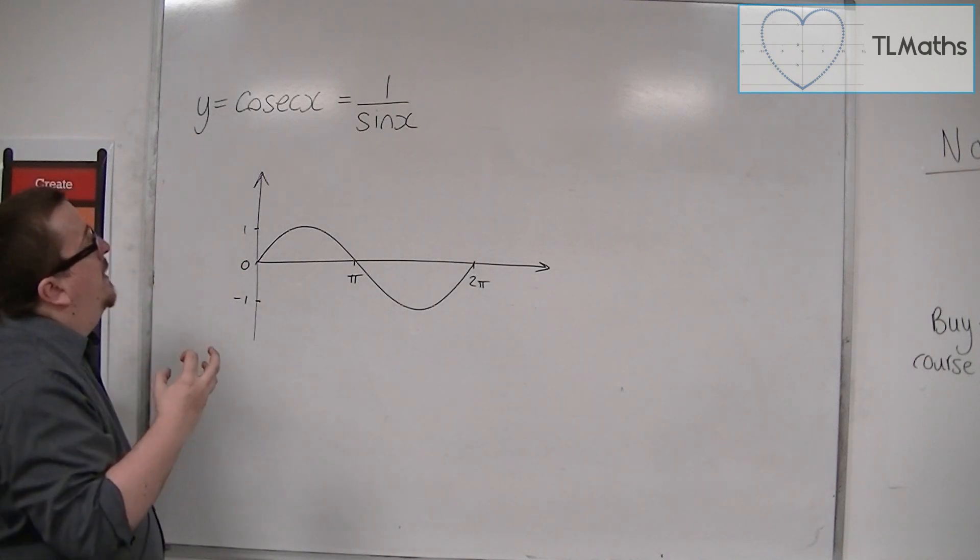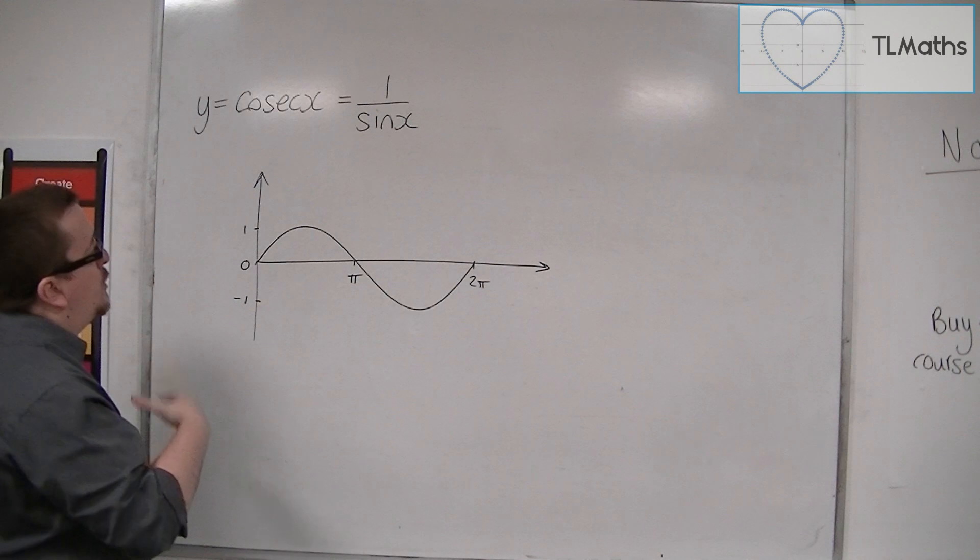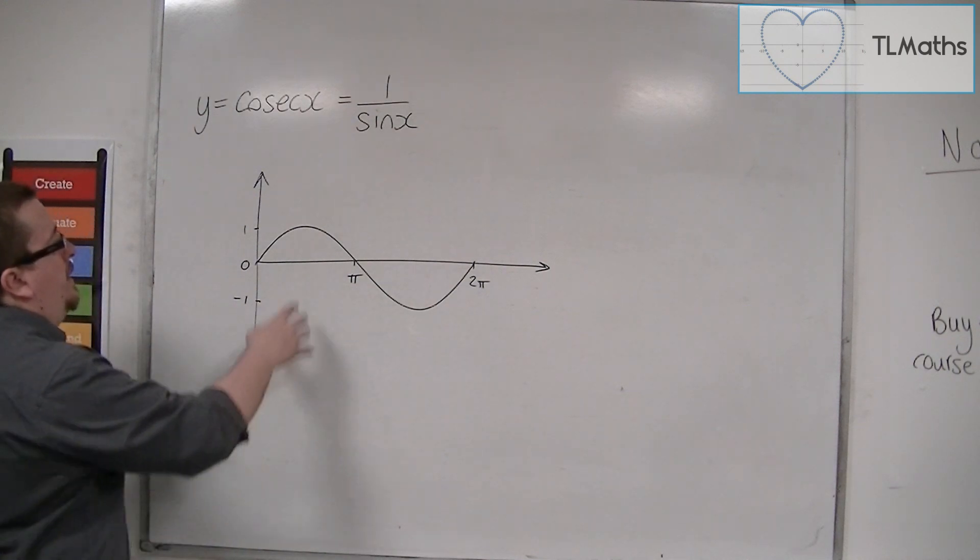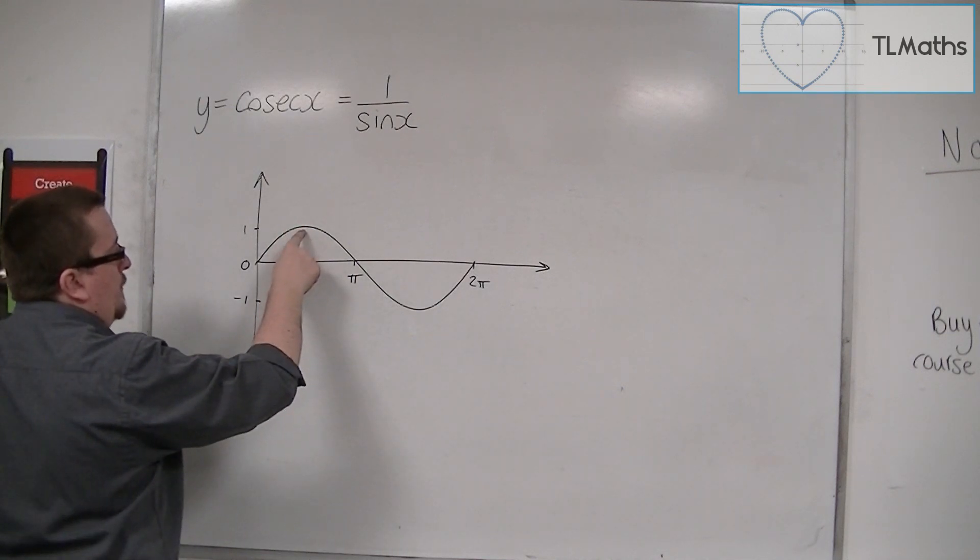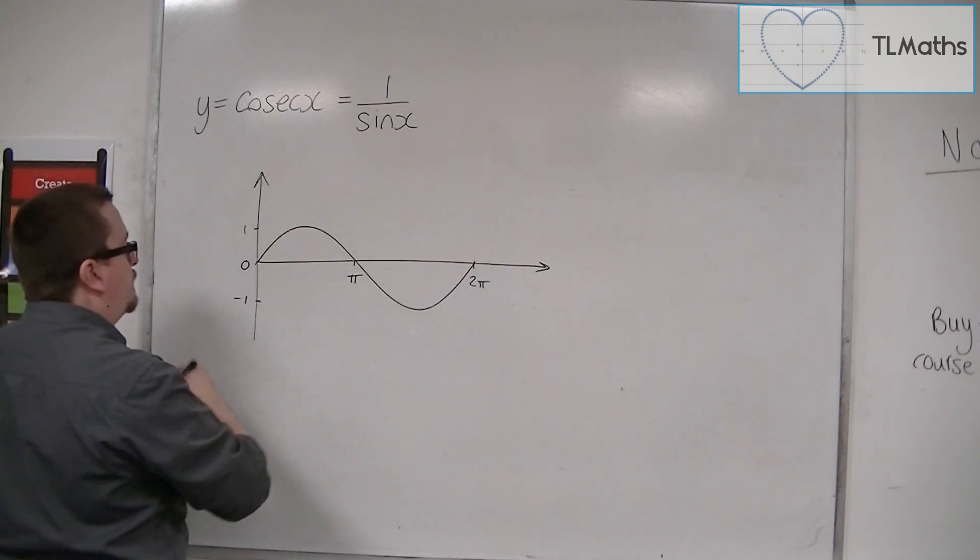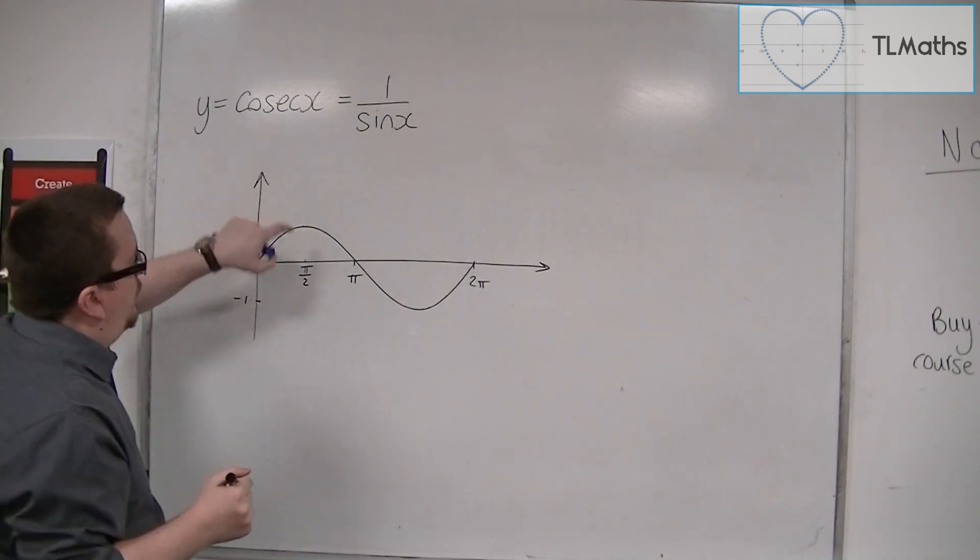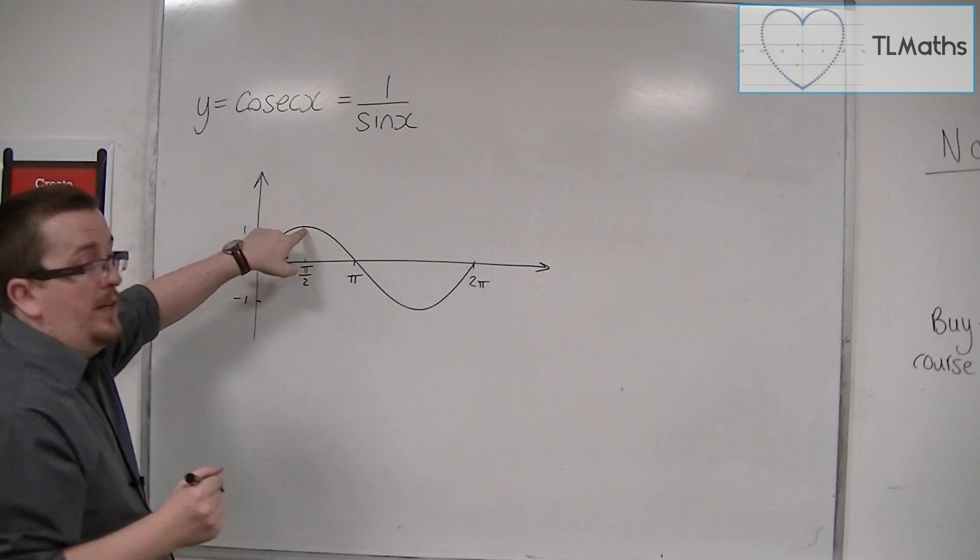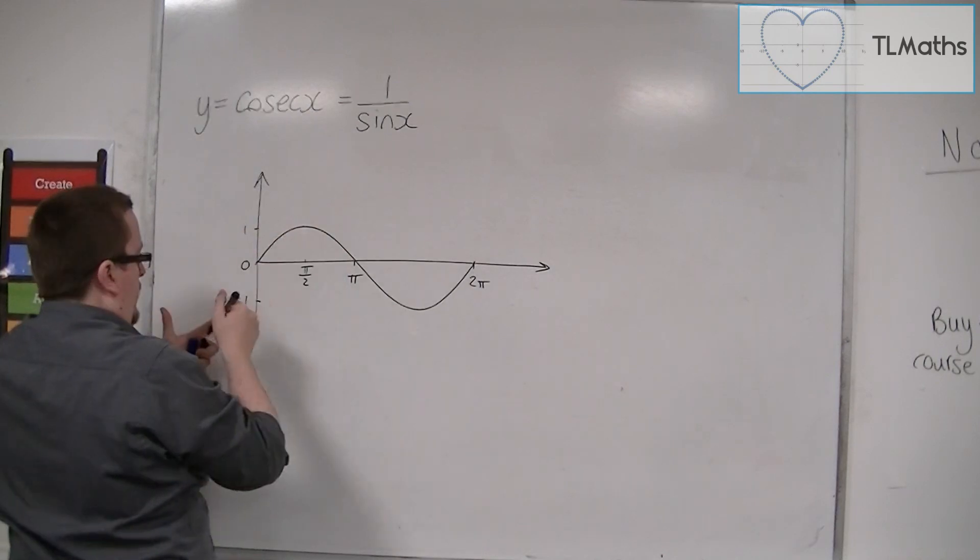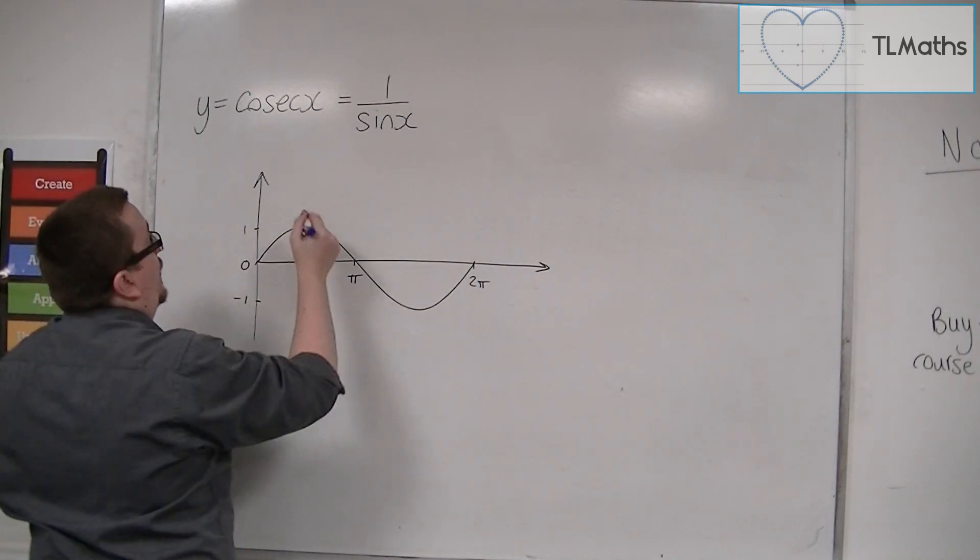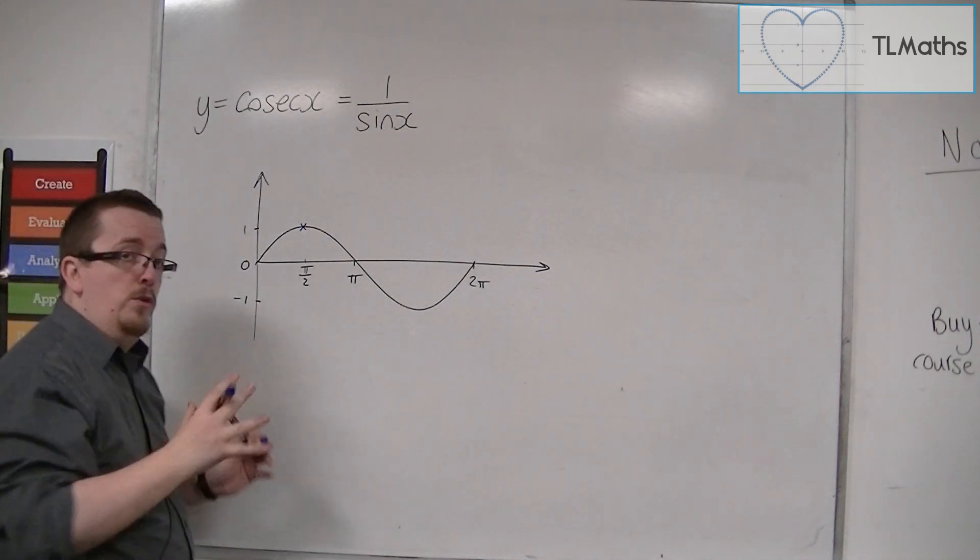Now Cosec x is 1 over sine. So if we look at particular points, like this point here, this point is π over 2, okay? So let's put that in, π over 2. And at this point, sine of π over 2 is 1. So 1 over 1 would be 1. So I know that Cosec of π over 2 must be 1 and must go through that point.